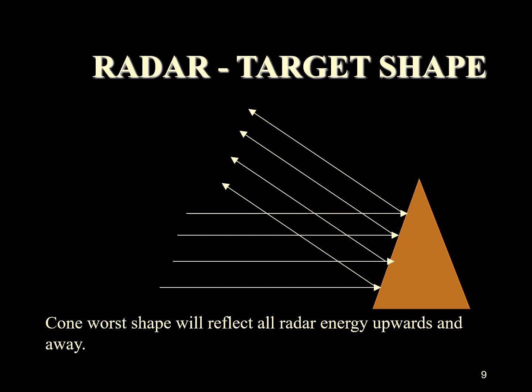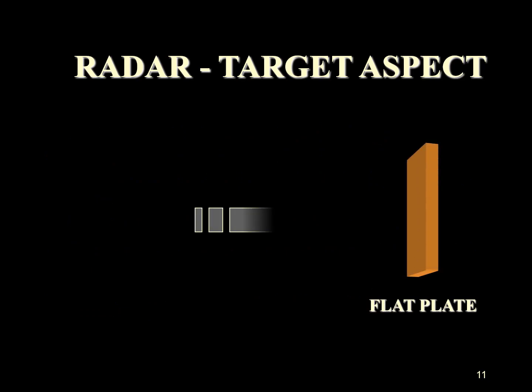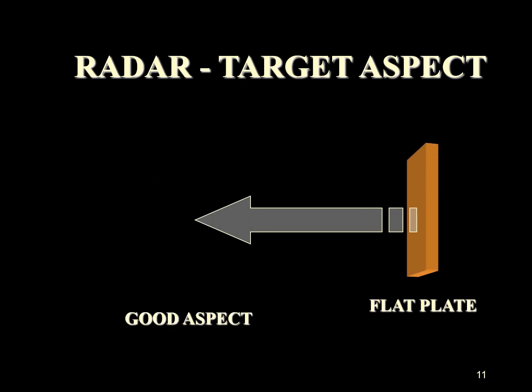Talking about target aspect — this is the most important condition affecting the echo. When discussing shape, the most common shape was left out, namely the flat plate, which can be either the very best or the poorest reflector depending on its aspect. Aspect is the angle of the plate to the radar beam. When it is flat onto the beam, maximum energy will be reflected back and a strong echo will result.